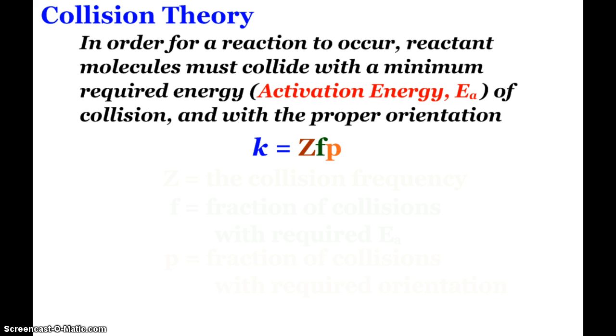For collision theory, in order for a reaction to occur, reactive molecules must collide with a certain amount of energy, a minimum required energy called the activation energy, symbolized Ea. This is the minimum energy required of the collision. These molecules must also collide with the proper orientation. In collision theory, k equals ZFP.